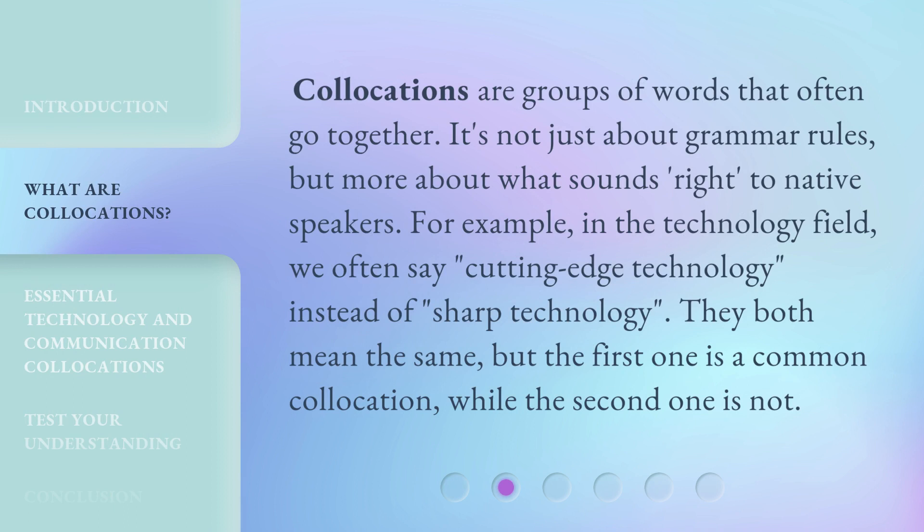Collocations are groups of words that often go together. It's not just about grammar rules, but more about what sounds right to native speakers. For example, in the technology field, we often say 'cutting-edge technology' instead of 'sharp technology.' They both mean the same, but the first one is a common collocation, while the second one is not.